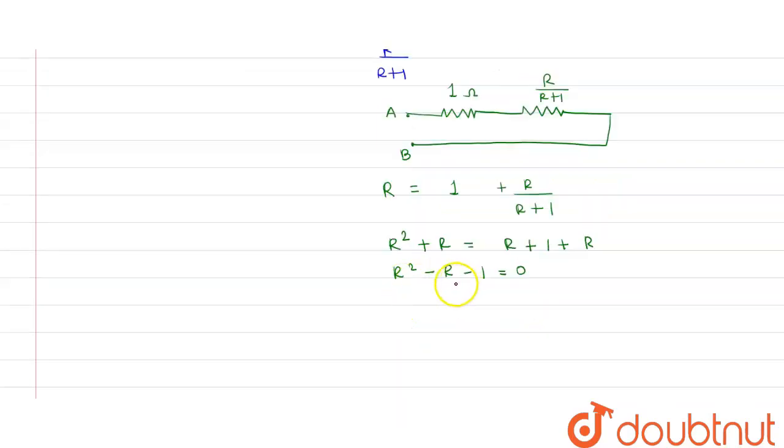Now the roots of this quadratic equation will be equal to, that is R equal to, we know that the formula minus B plus minus root B square minus 4AC. So this will be 1 as B is minus 1 here.